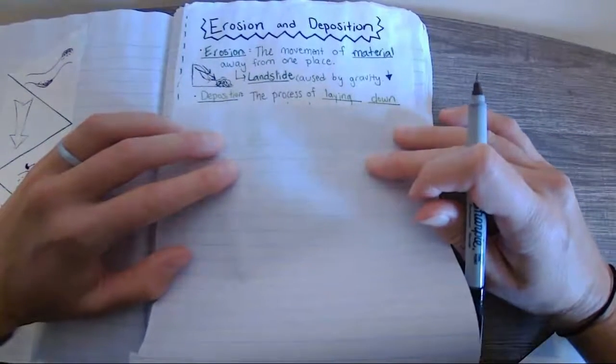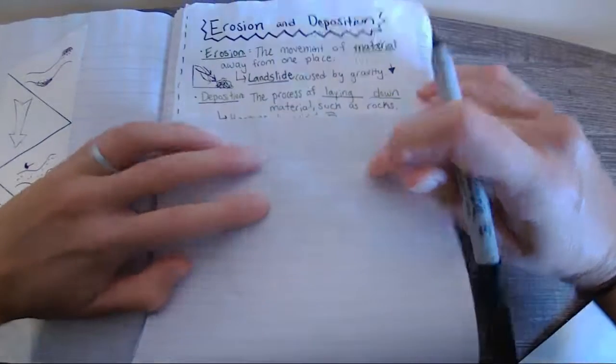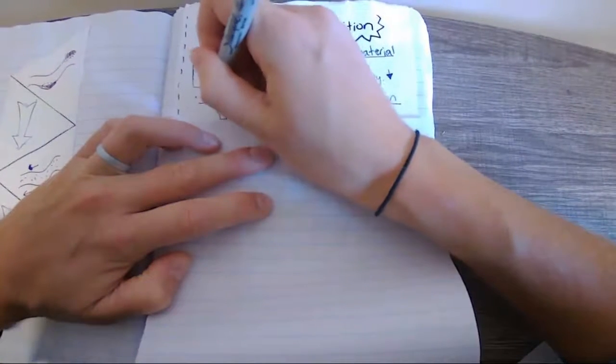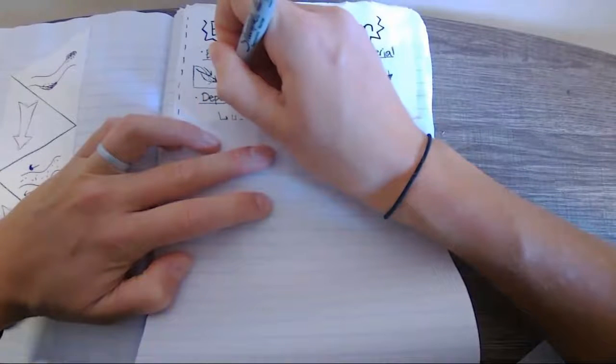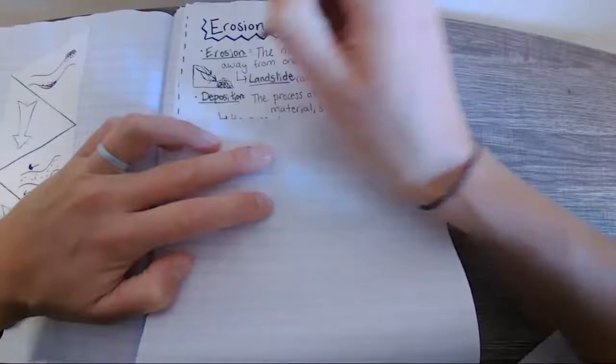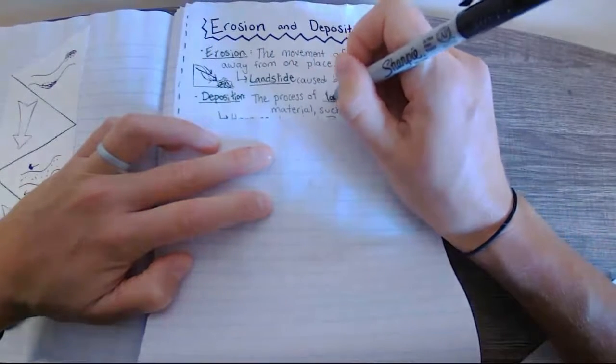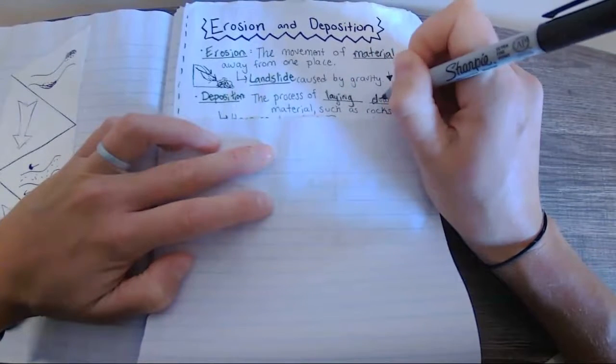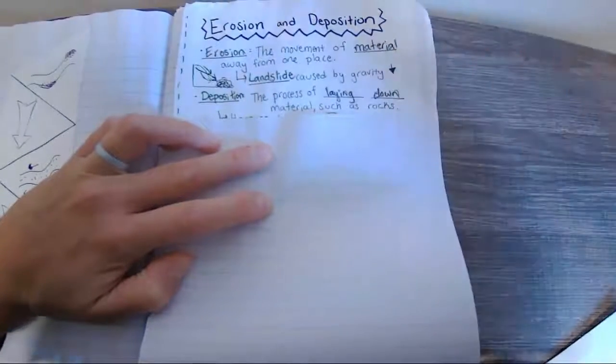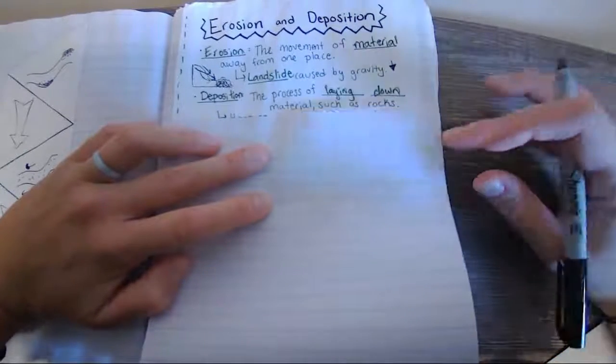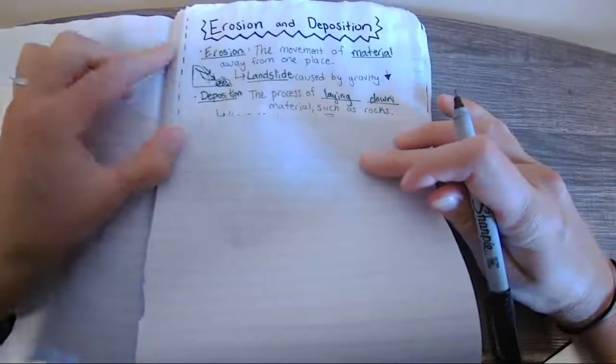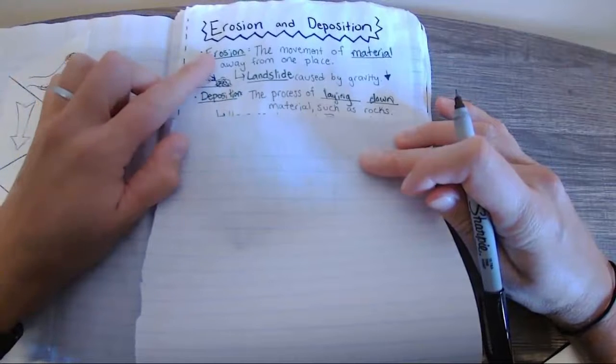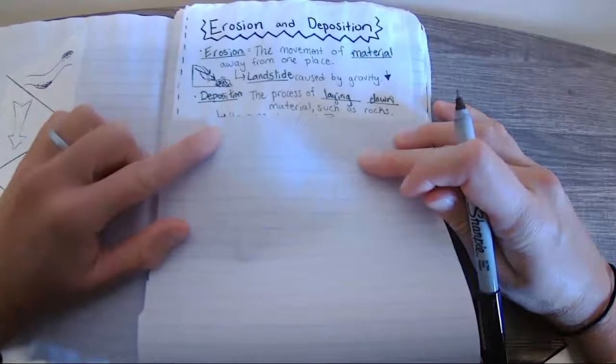Deposition. This is the process of laying down materials such as rocks. Deposition, the process of laying down materials such as rocks. So these two are big words in our vocabulary for this unit. Erosion and deposition. Okay, so erosion is the movement. Deposition is the process of laying it down.